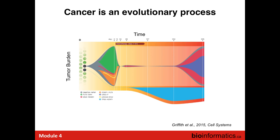If a mutation confers a highly advantageous phenotype to the cell, those cells outcompete their neighbors. We can see these on this graph: the initiator mutations are in gray, and subsequent mutations that confer a selective advantage generate these green clones or these orange clones. Mutations that don't confer a selective advantage are not selected for, and so they remain at a constant frequency or eventually disappear.